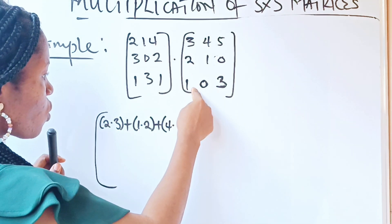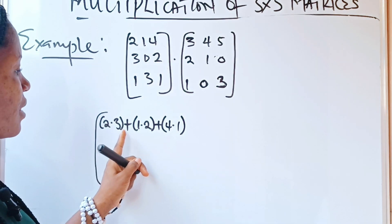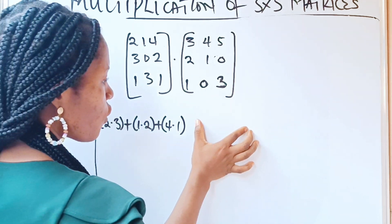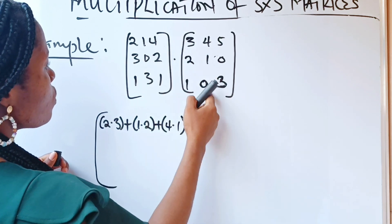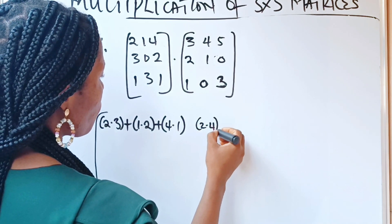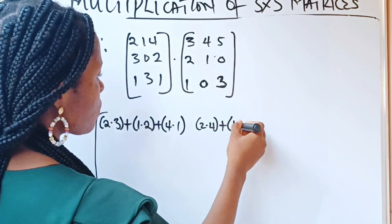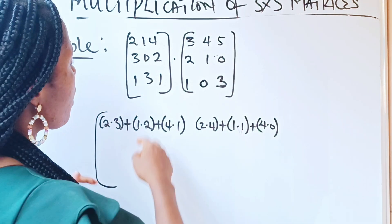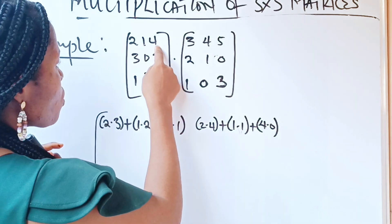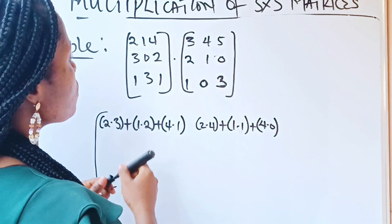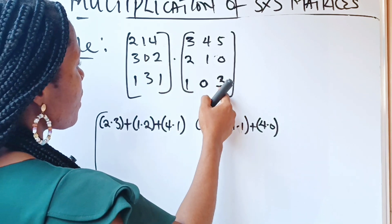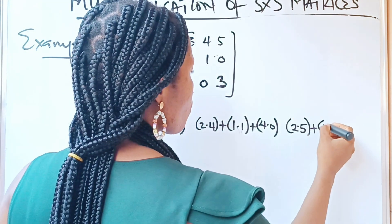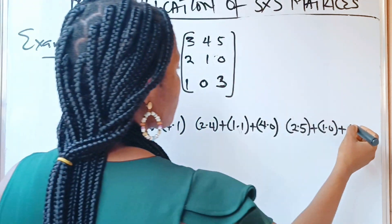We have used the first row to multiply the first column, forming the first number. Now we use the first row to multiply the second column to form the second number: 2 times 4, plus 1 times 1, plus 4 times 0. Then the first row multiplies the third column to form the third number: 2 times 5, plus 1 times 0, plus 4 times 3.